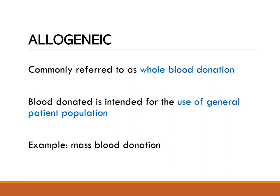Next, we have allogenic blood donation, commonly referred to as whole blood donation. Blood donated is intended for the use of the general patient population. An example is blood coming from mass blood donation drives, which most hospitals conduct to increase their supply in the blood banking laboratory. Personnel from the blood bank go to venues to encourage people to donate and increase the hospital's blood supply.